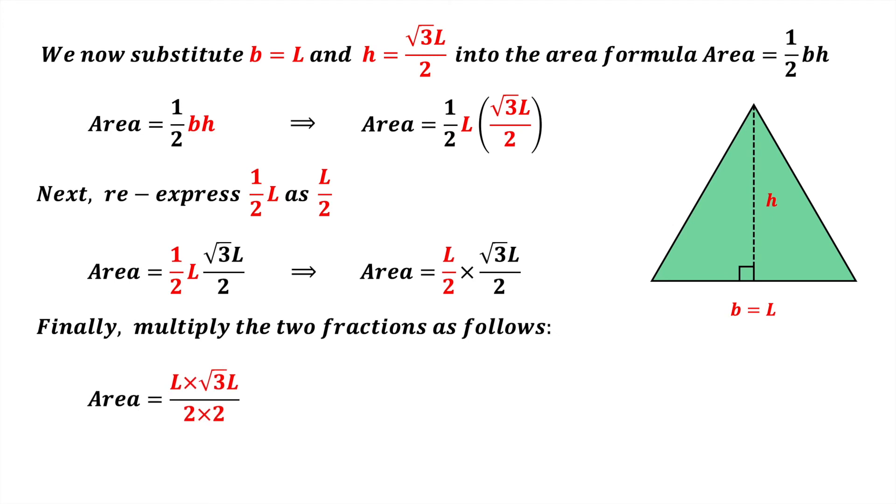Area equals L times root 3L divided by 2 times 2, which becomes area equals root 3 times L squared divided by 4, or area equals root 3 divided by 4 times L squared. And there we have it, the formula for the area of an equilateral triangle.